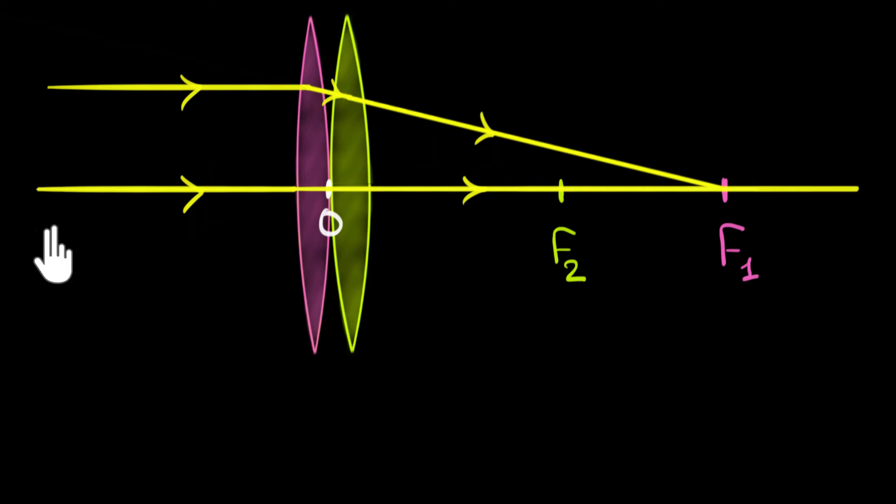So this point over here, that point is now going to be the object for our second lens. That's going to be the object for lens two. And now where will this ray go?